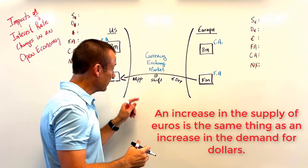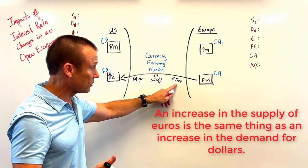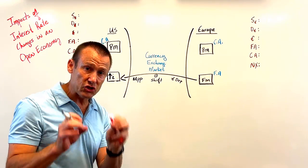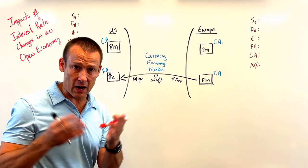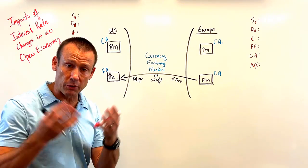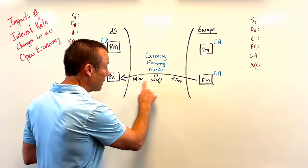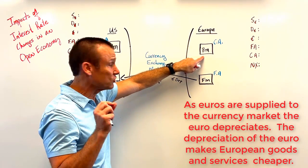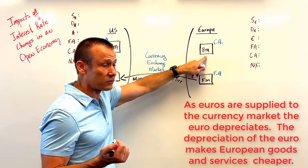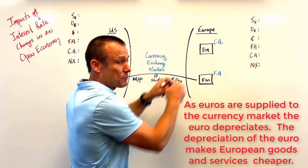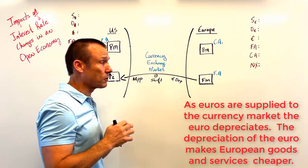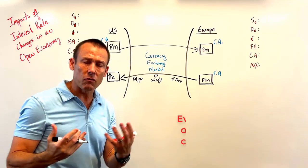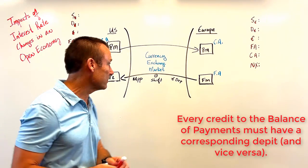The dollar appreciating and the euro depreciating are basically saying the same thing. These changes in the exchange rate cause movement along the supply and demand curves, bringing us back into balance. As the dollar appreciates, U.S. imports become cheaper for Americans. If the euro depreciates, European goods get cheaper — both mean the same thing. At the same time, U.S. goods become more expensive for Europeans, so as money flows in on one side, it flows out the other. Our balance of payments has to balance.